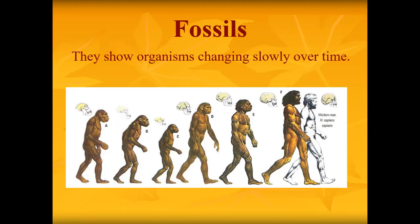Fossils are also part of the evidence for evolution. They show organisms changing slowly over time. Starting with the most recent, here are humans — homo sapiens — and then a very closely related Neanderthal. Going back further, this is probably not a homo sapien, but something related to us very distantly back in time.